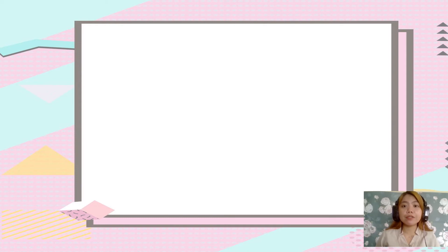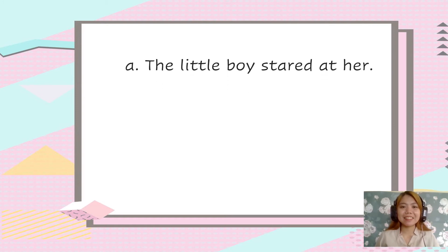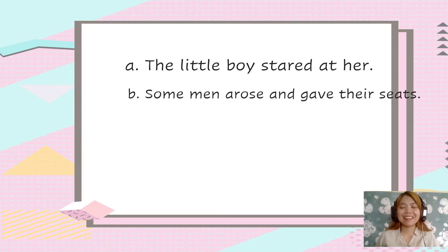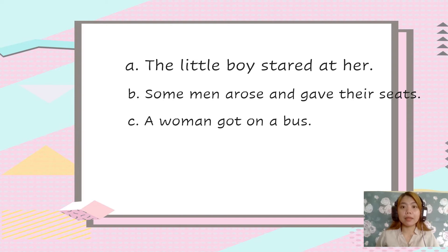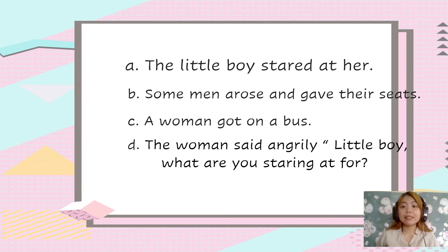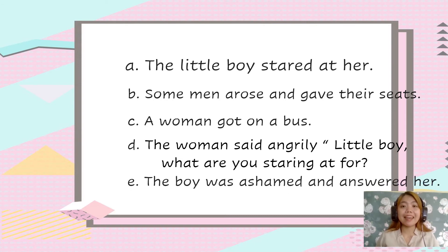Now here are the following events that happened in the story. Let us first read and analyze the events, and after that, we will sequence them in the correct order. Are you ready? Let's go! For sentence A: the little boy stared at her. Sentence B: some men arose and gave their seats. Sentence C: a woman got on a bus. Sentence D: the woman said angrily, 'Little boy, what are you staring at for?' Sentence E: the boy was ashamed and answered her.